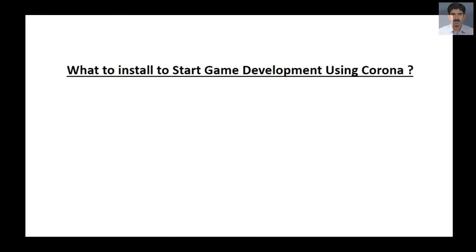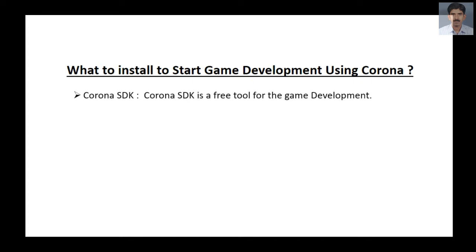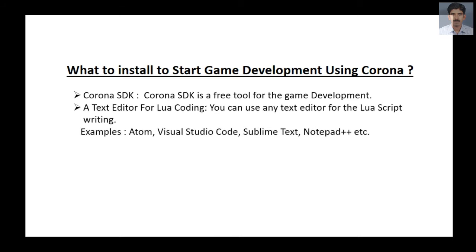Now we can check what software components must be on our computer to start game development using Corona. The first one is Corona SDK — Corona SDK is a free tool for game development. Second, you need a text editor for Corona script writing. The script language is Lua, so you can use any favorite text editor such as Atom, Visual Studio Code, Sublime Text, or Notepad++. For this tutorial series, I am going to use Notepad++ for the Lua script writing.